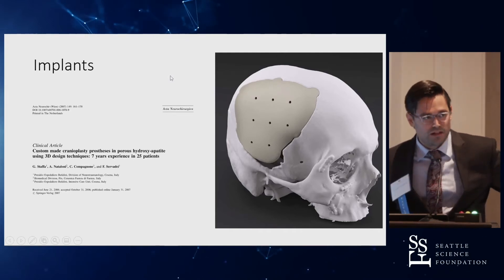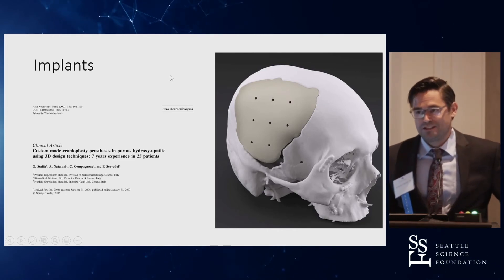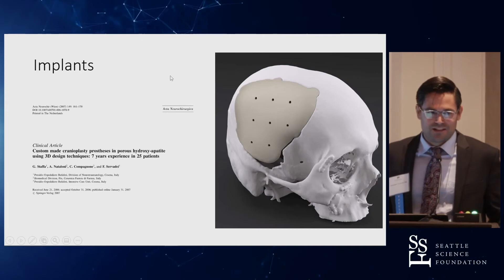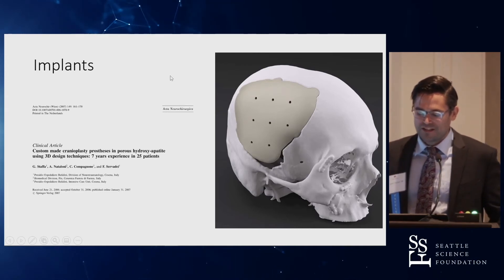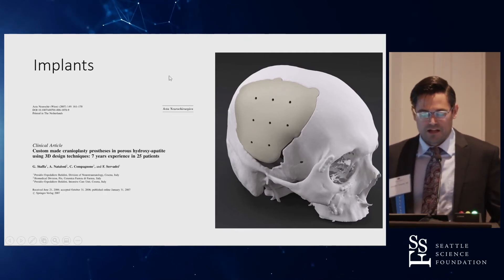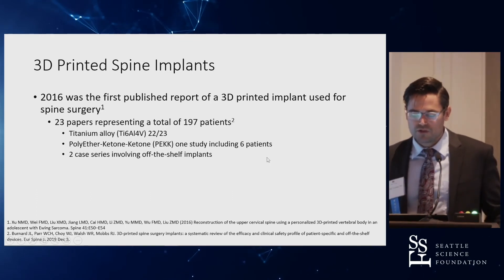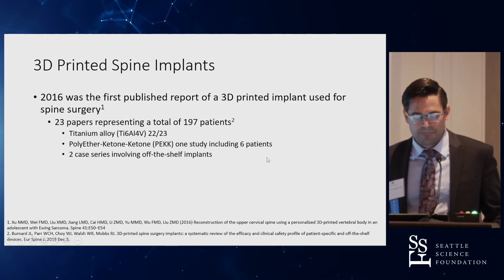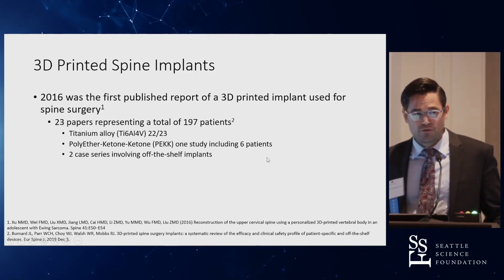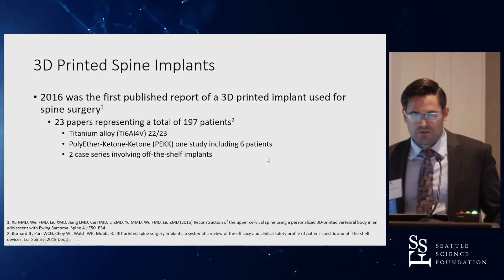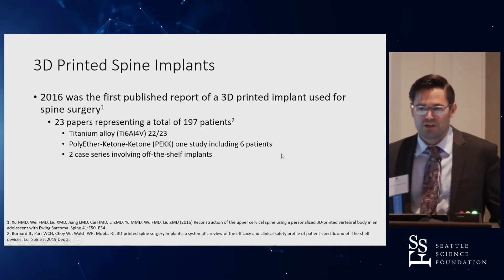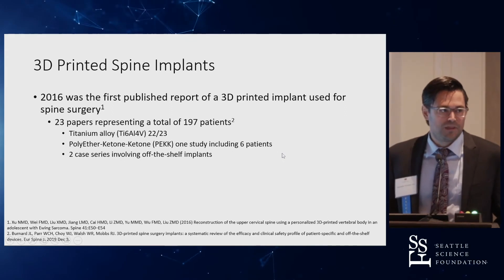The next step is permanent implants. In neurosurgery we've been putting in custom implants for decades — after hemicraniectomies for cranioplasties, they're safe, though not quite the same as what we're dealing with in the spine. Since 2016 was the first published report of a 3D printed implant used for spine surgery. Since then there have been 23 papers with a total of 197 published patients. The vast majority use 3D printed titanium, and most publications relate to custom implants, though two case series use off-the-shelf implants.